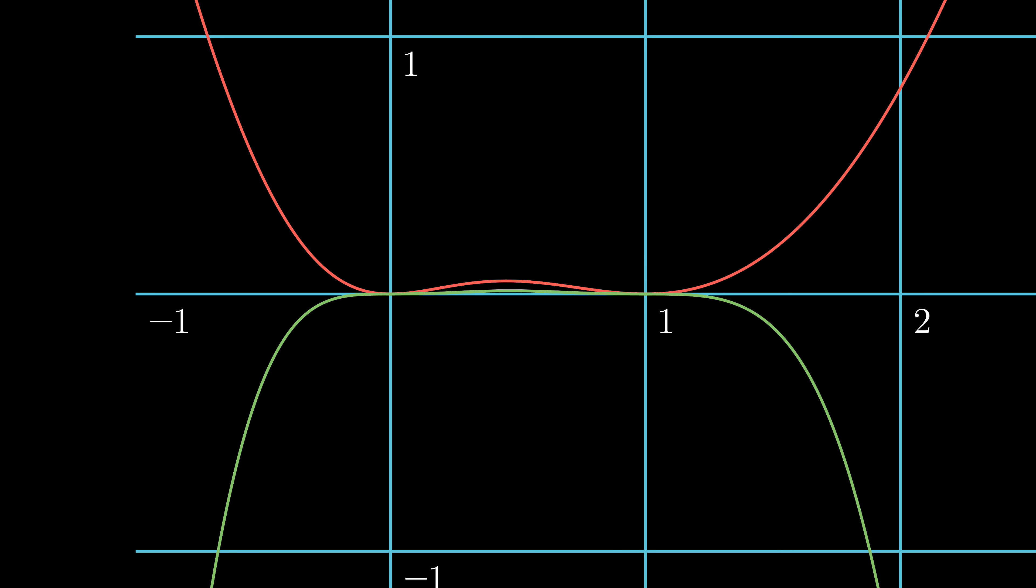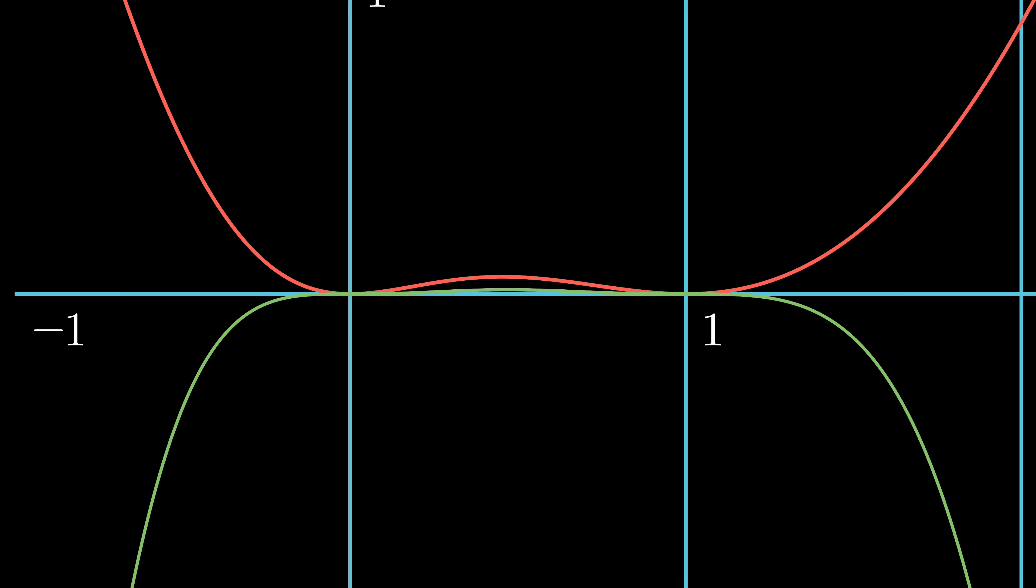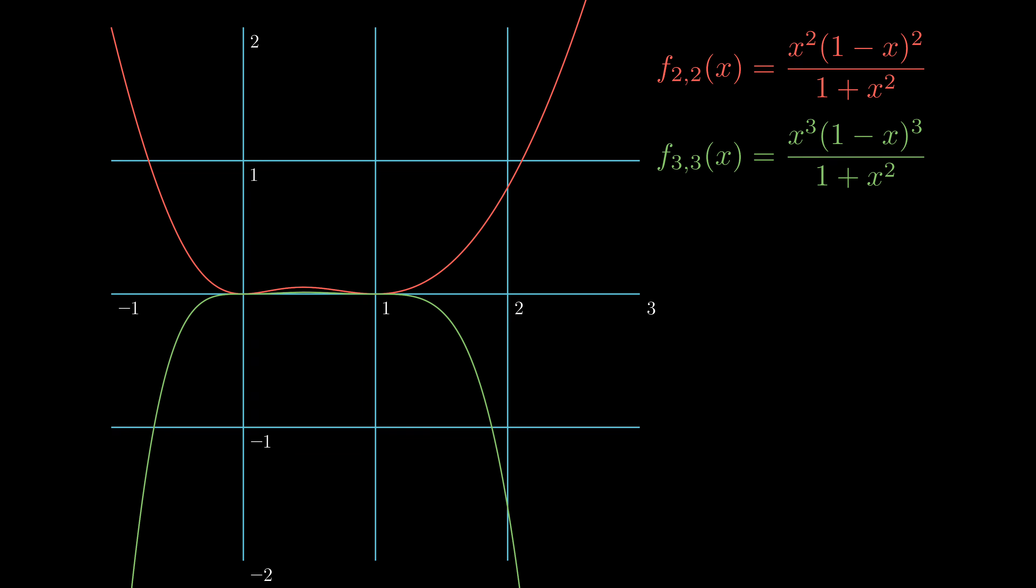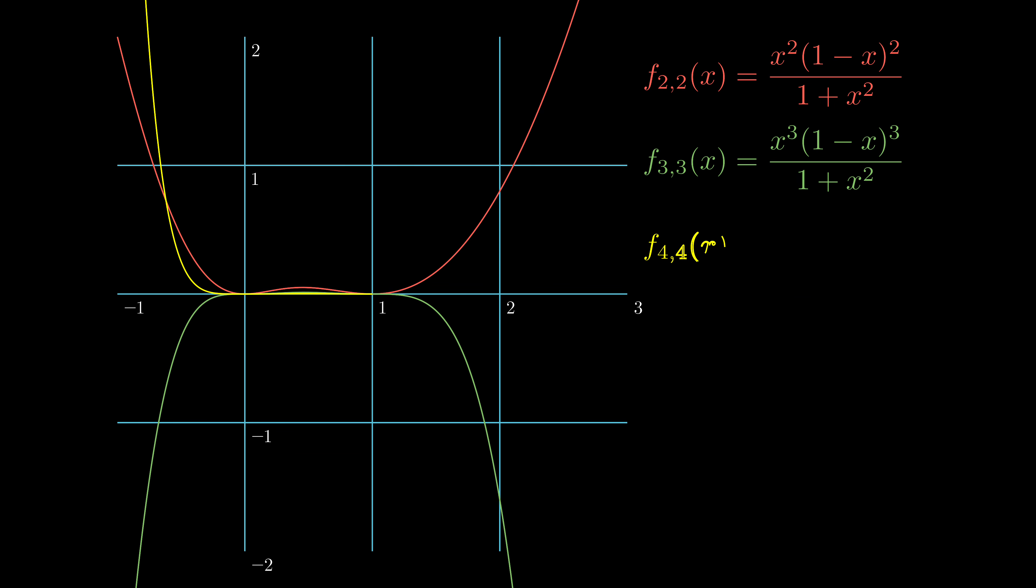When m and n are both three, we have to zoom in one more time to see the pancake. The idea is that we can keep squeezing this pancake such that we can get a finer and finer upper bound of pi.